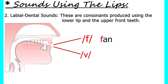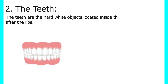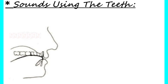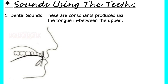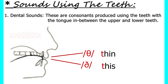Now let's look at the teeth. The teeth are the hard white objects located inside the mouth immediately after the lips. They are divided into two: the upper set and the lower set. Sounds produced using the teeth with the tongue in between the upper and lower teeth are called dental sounds, as in 'th' in thin and 'th' in this.